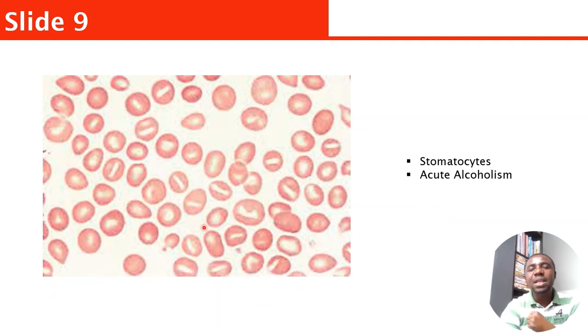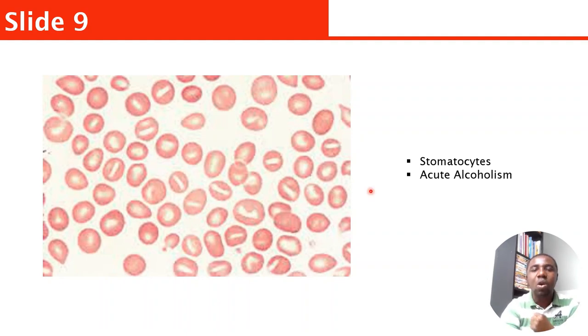This one is called stomatocyte. When you see the red cell with a middle line through it, that is called a stomatocyte, and it is common in acute alcoholism.